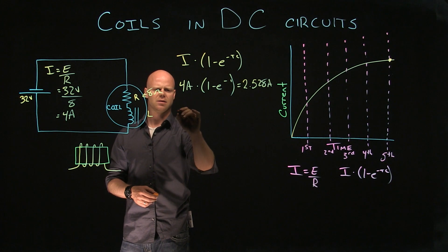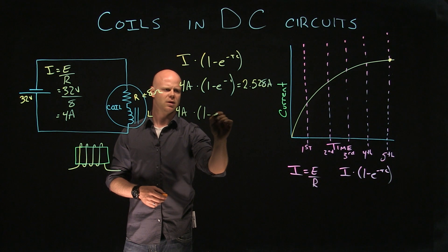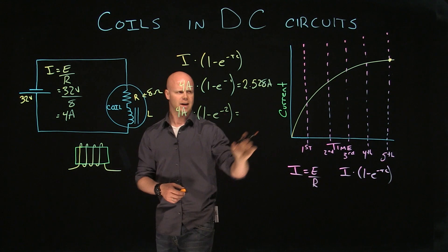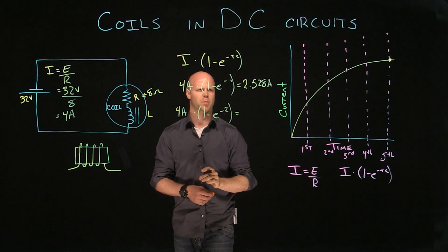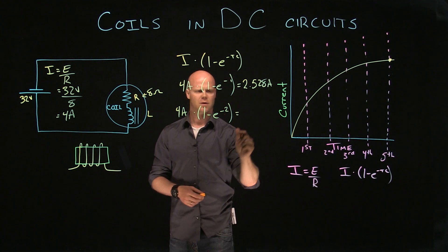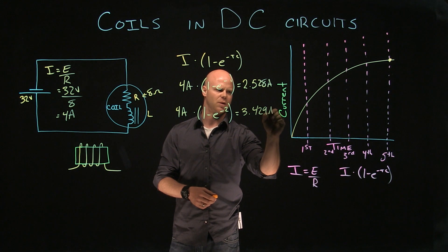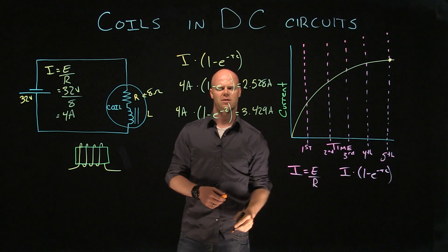As we progress, we can look at each individual point in time. We can go to the second time constant, and we can see it should be an increase of 63.2% from 2.528. So 3.429 amps would be roughly the current at the second time constant. What we're seeing is a slow increase.